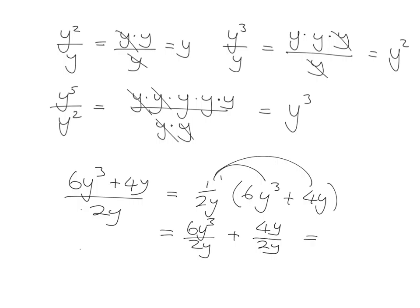Simplifying down here. What does 6y cubed mean? It's 6 y y y. And then it's over a 2y. And then what do I have here? I've got a 4y over a 2y cancelling.